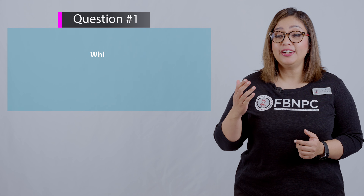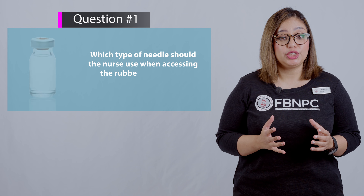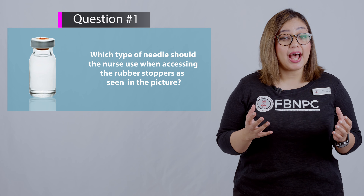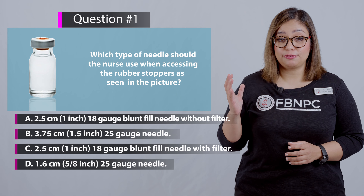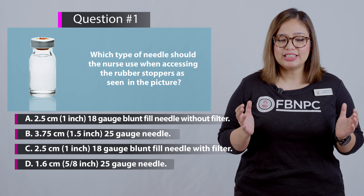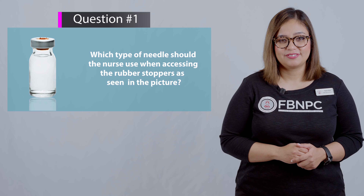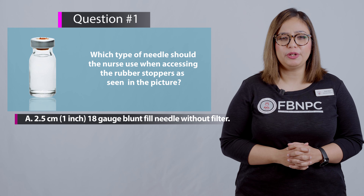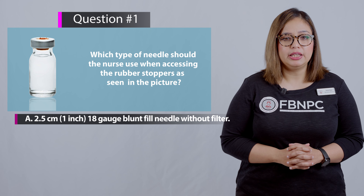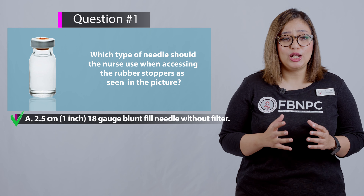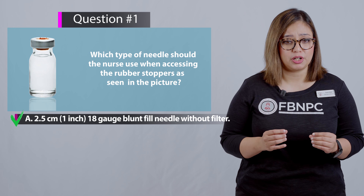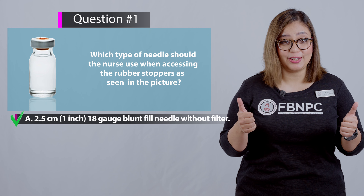I hope you enjoyed learning the procedure of drawing up medication from a vial. Let's practice some NCLEX-style questions related to this skill. The first question: which type of needle should the nurse use when accessing the rubber stopper as seen in the picture? The correct answer is option A — a 2.5 cm (1 inch), 18-gauge blunt fill needle without a filter. A large-gauge blunt fill needle should be used because the top is rubber, so no filter is needed.